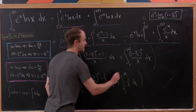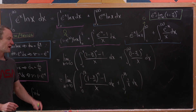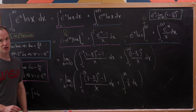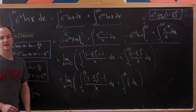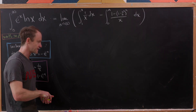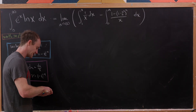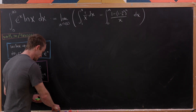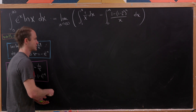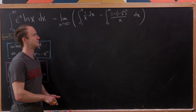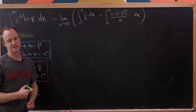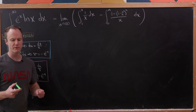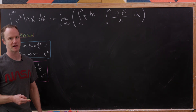So we've got this new expression: the limit as n goes to infinity of the integral from one to n of one over x dx, minus the integral from zero to n of (1 minus x over n) to the n over x, dx. I've rewritten things a little bit, but not too much. Now let's perform a substitution on this second integral.